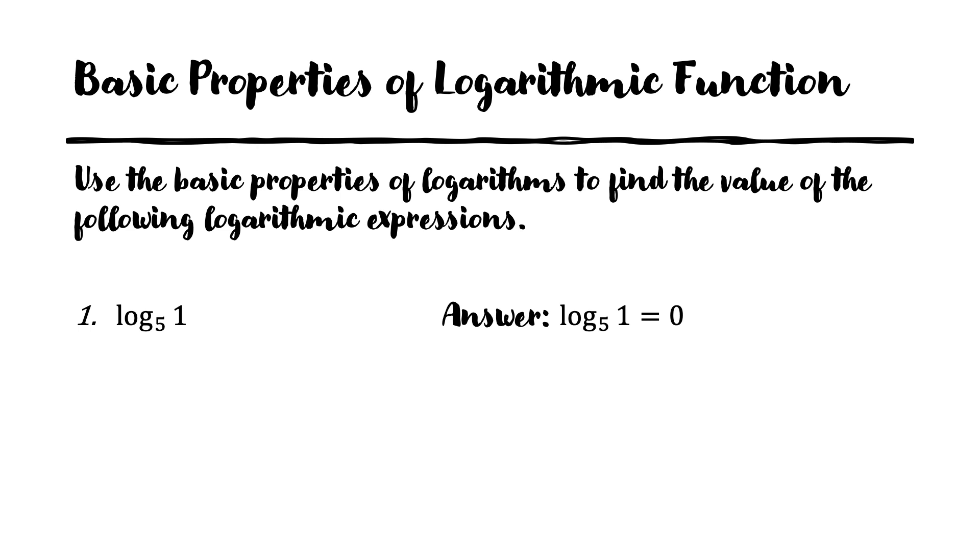Log of 1 base 5 is 0 because log of 1 base b for any b is equal to 0. Log of 1 is equal to 0. Now in this case you might ask what is the base for this logarithm? Well, when the base is not written, it is assumed that the base is 10.